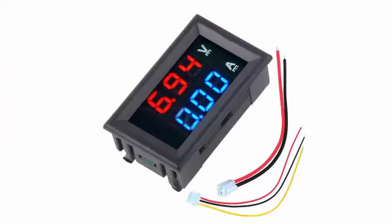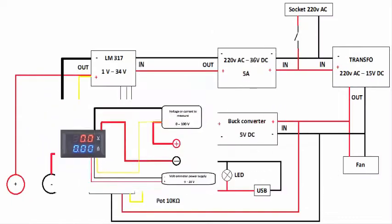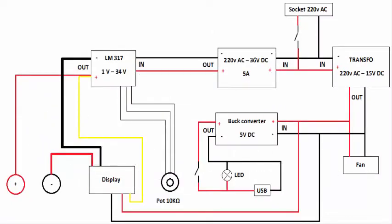This volt ohm meter can measure a voltage between 0 and 100 volts. It has two thick wires and three thin wires. Here is the diagram of its assembly. And here is the final schematic of all the modules and components.